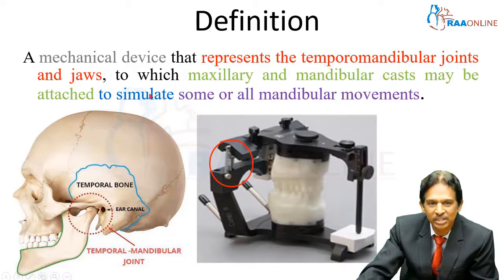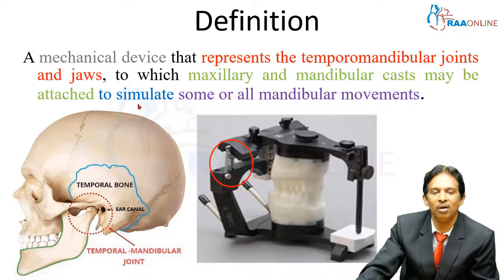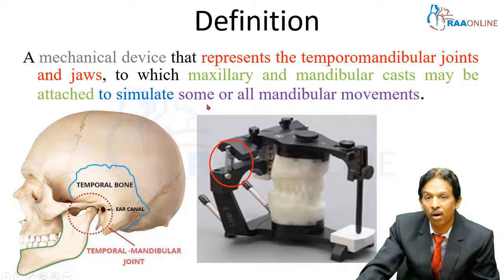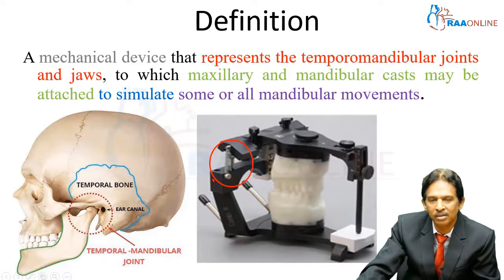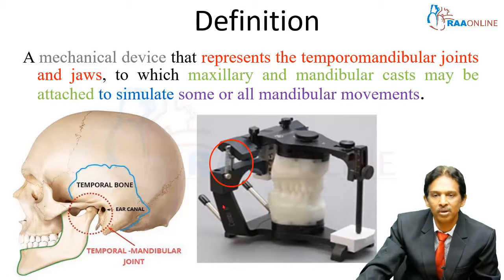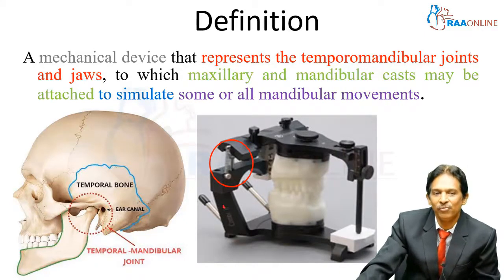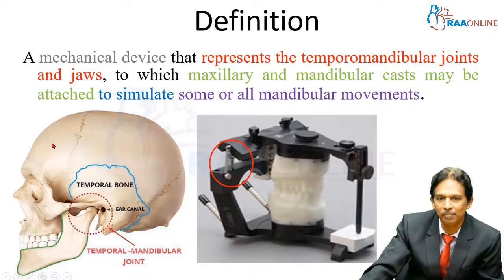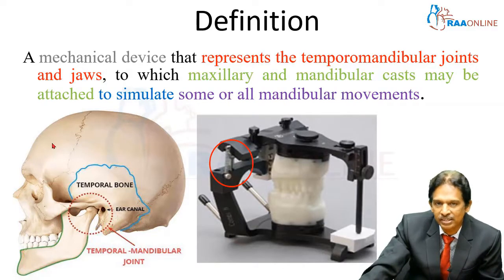For what purpose are the casts attached? To simulate — meaning to mimic — almost like natural, whatever function the temporomandibular joint performs. This is called 'simulate some or all mandibular movements.' Not all articulators accept all mandibular movements. There are Class I, Class II, and semi-adjustable articulators where only a few mandibular movements are possible. Only the fully adjustable articulator can reproduce all mandibular movements.